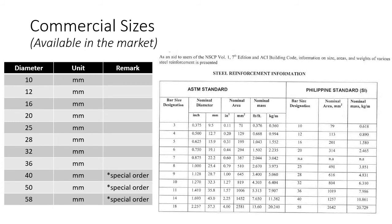Mahirap ordering yan. Pag nagkulang ka sa quantity takeoff mo, hindi mo yan mapapabili sa mga tao mo. Hindi mo yan mabibili agad sa soaking hardware. Pabibit-bit mo sa mga labor mo. So kailangan may pasobra ka sa iyong estimate. (Translation: Those are hard to order. If you fall short in your quantity takeoff, your people can't just buy them easily. You can't buy them right away from a regular hardware store, and your workers will be delayed. So you need to add a buffer to your estimate.)